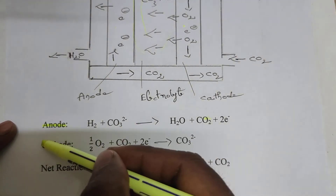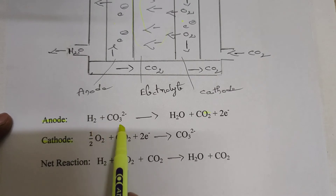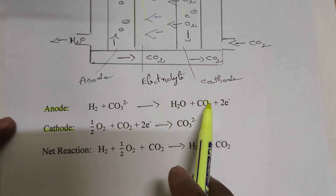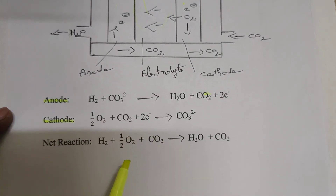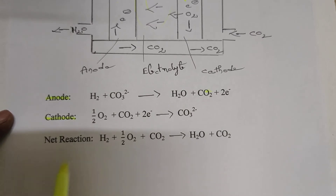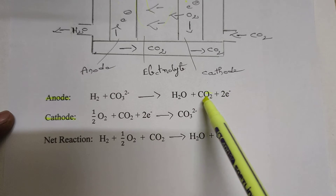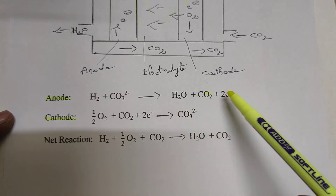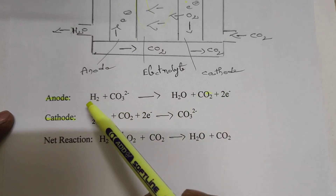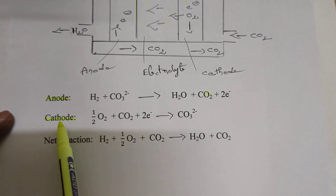At the anode, the half-cell reaction is: H₂ + CO₃²⁻ → H₂O + CO₂ + 2e⁻. At the cathode, oxygen is reduced by the electrons produced from hydrogen and carbonate: ½O₂ + CO₂ + 2e⁻ → CO₃²⁻.